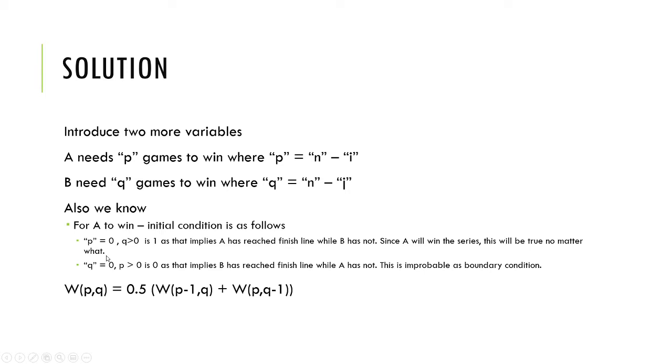If it changes to be something else, you can set these boundary conditions. In this case, q equals 0 and p greater than 0, which means B has reached the finish line and A has not. This probability is 0 because this would imply B has won, and B cannot win for our dynamic programming.